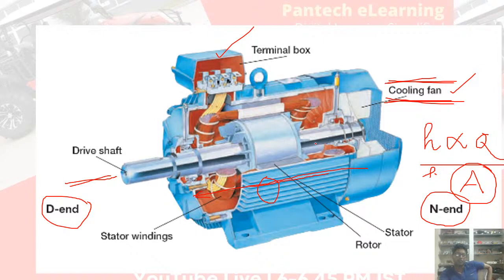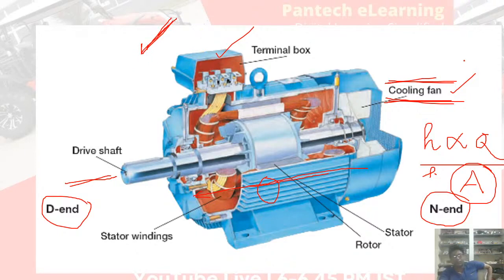The convective heat transfer coefficient, which is called h, is directly proportional to flow. If you increase the flow, your heat evacuation will be augmented. Convective heat transfer also depends on the surface area — that's why these fins are provided to extend the surface area, which is called extended surface heat transfer. These are the constructional features of the machine. As my teacher told me, motor control is an endless subject; all branches of engineering are involved — it's an ocean.